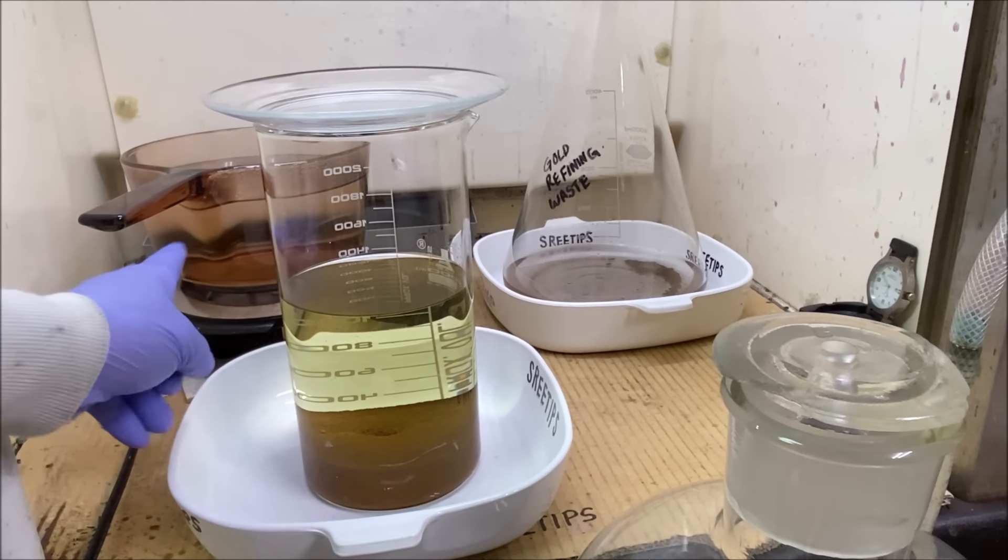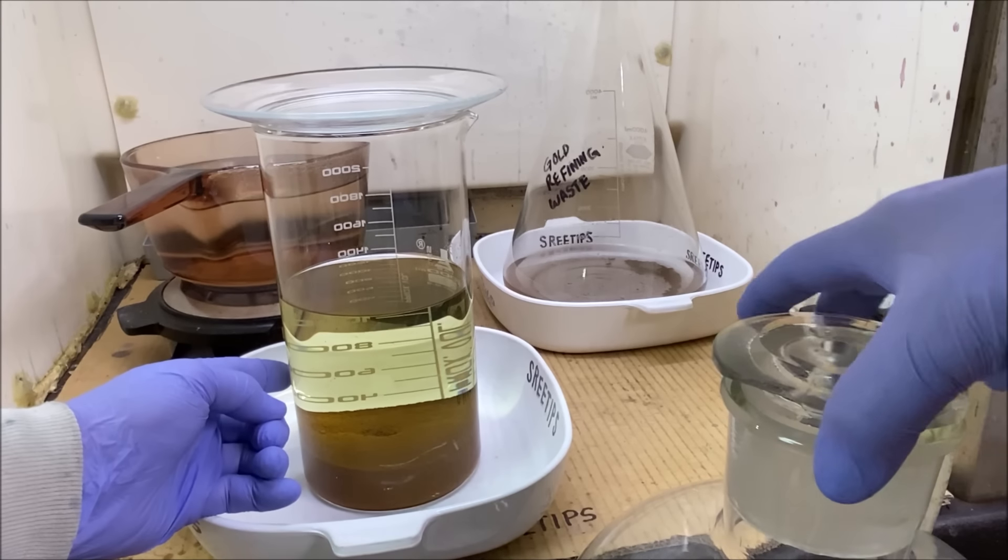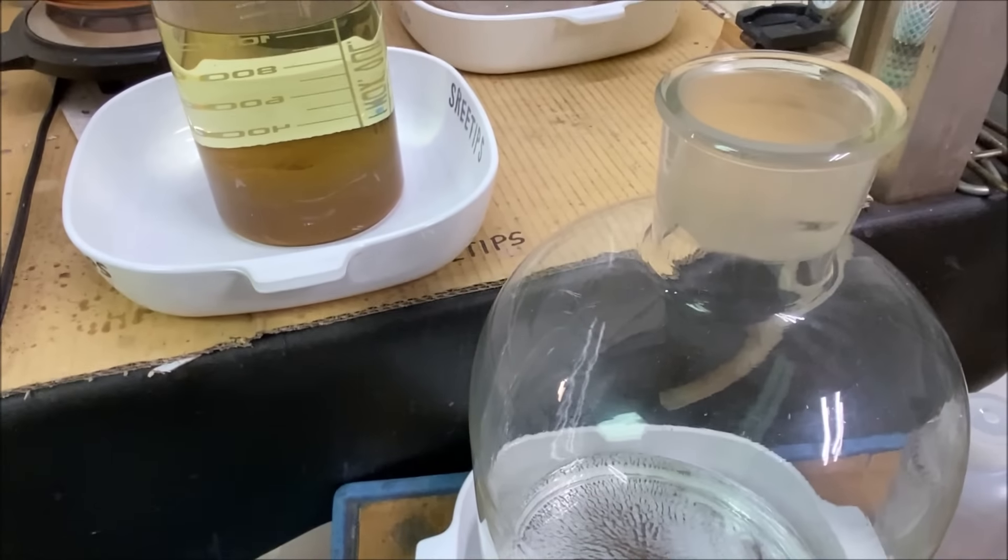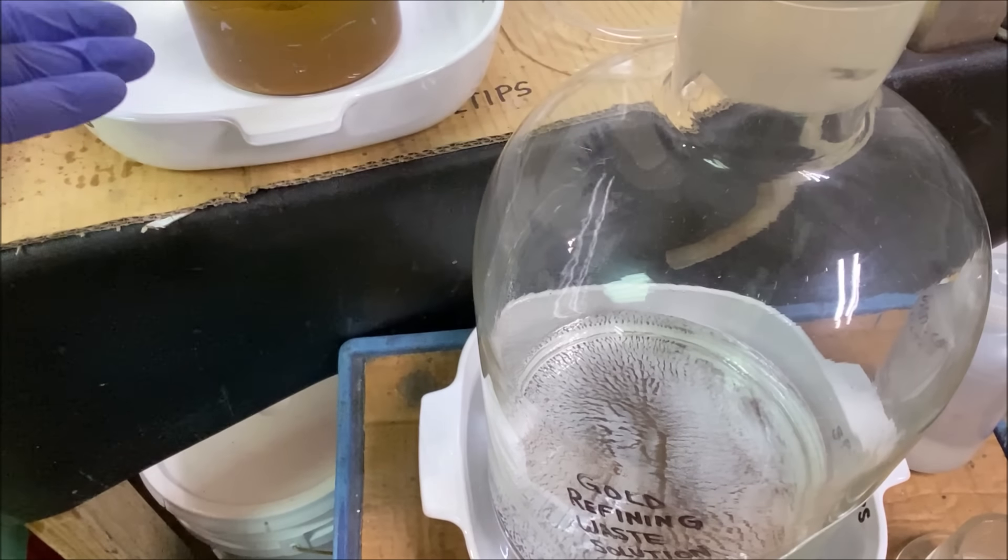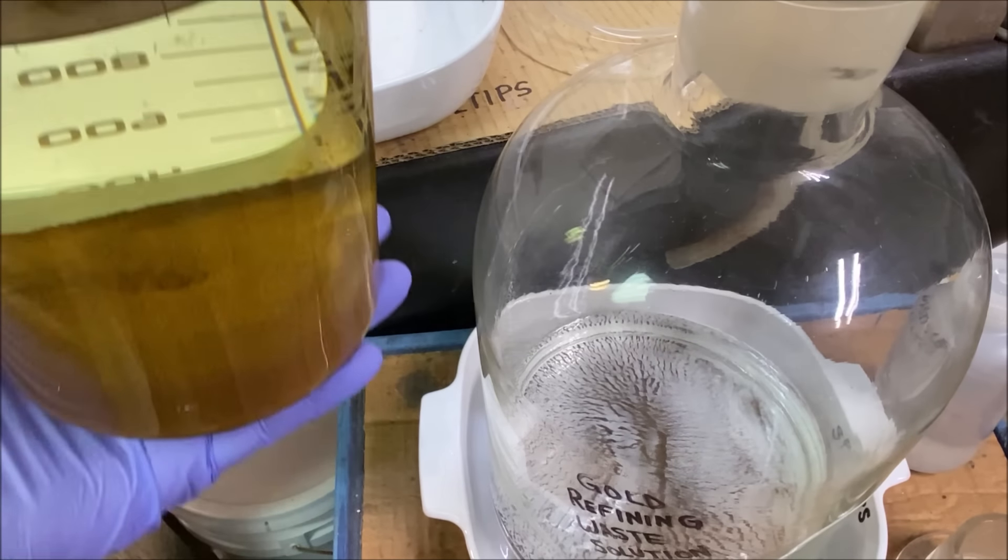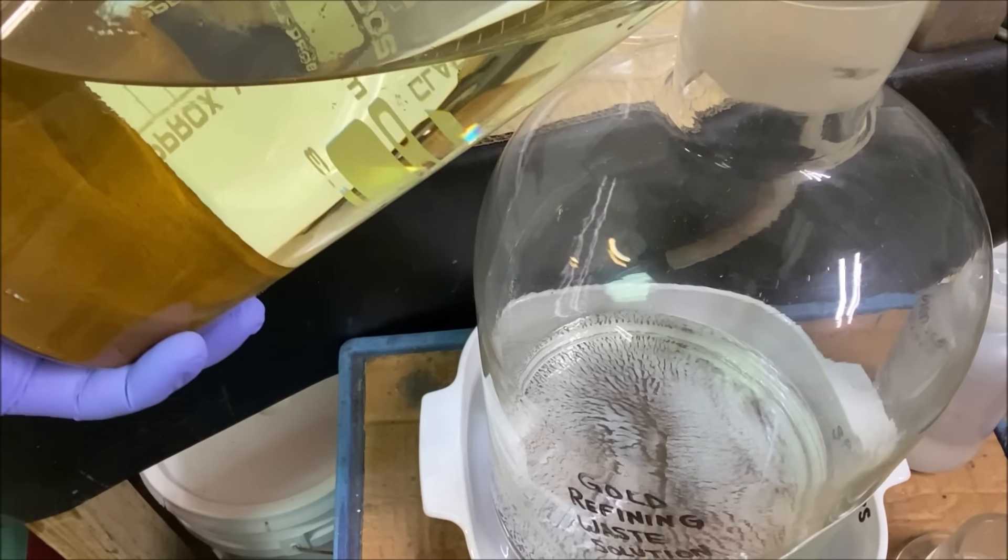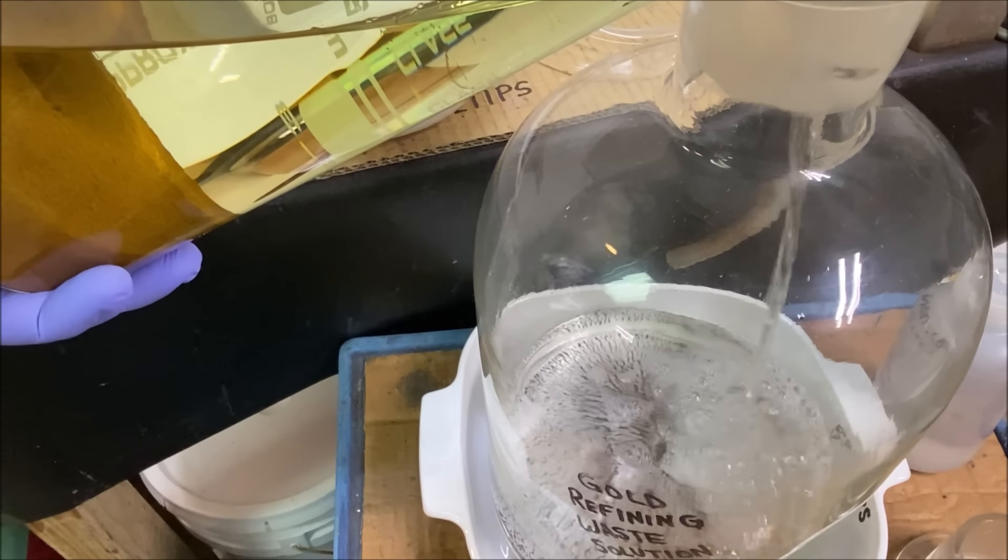Rinse all that off of there. I'm going to rinse the gold off with some boiling tap water, but first I'm going to pour this off into a gold refining waste container. This waste container is not heat resistant, so I'm going to pour off this initial amount of waste into this non-heat resistant waste container.